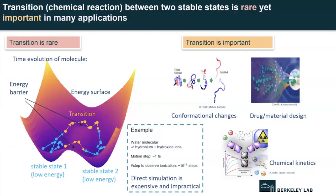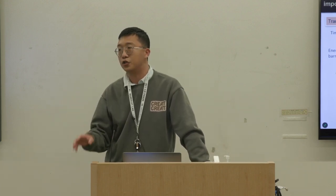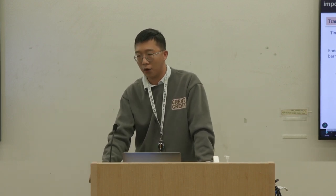We are interested in the chemical reaction that happens during the evolution of molecules. This reaction is a dynamical process where the molecule transits from one metastable state to another. These transitions are rare but they are important in many applications. For the transition to occur, the energy of the molecule must go over the energy barrier from one local energy minimum to another.